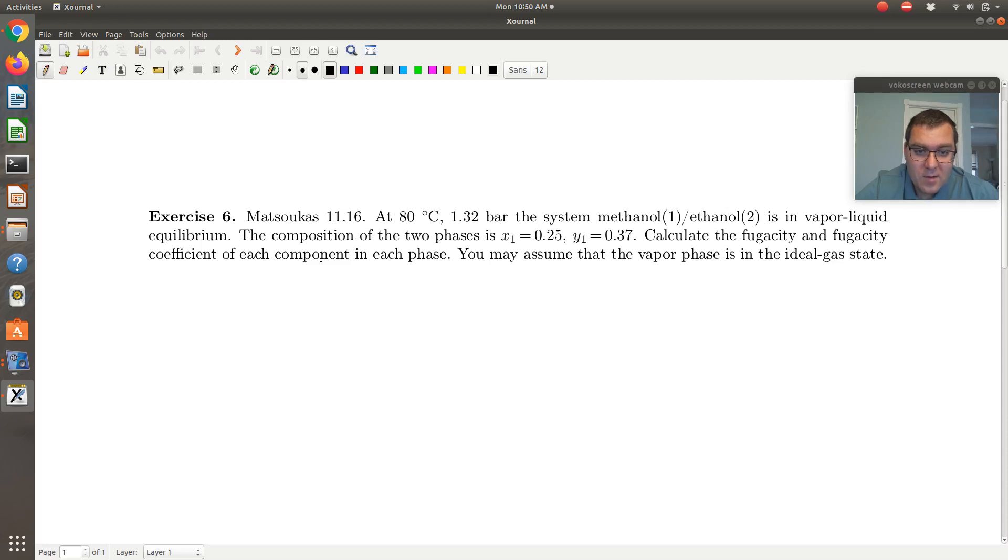But what's key is we're asked to calculate the fugacity and fugacity coefficient of each component in each phase. So if we're told we have a system of two-phase coexistence and we can assume the vapor phase is an ideal gas, what's the fugacity of a component in an ideal gas equal to?